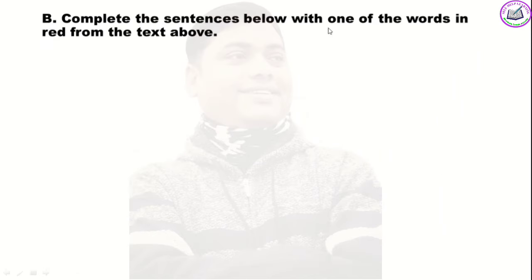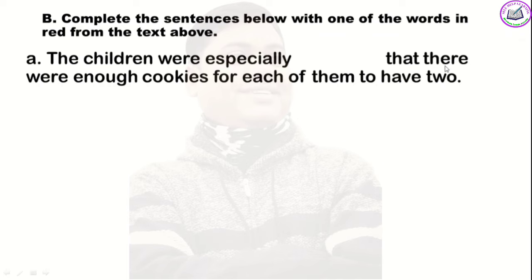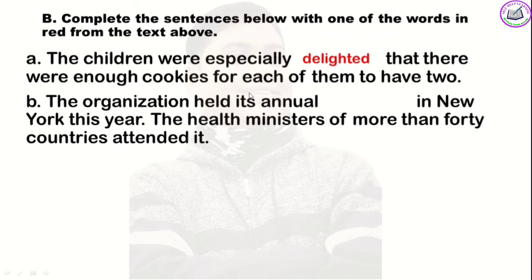Now complete the sentences below with one of the words in red from the text above. We have different bold-faced red words, and we have to select a word from there to complete the gaps. First sentence: 'The children were especially _____ that there were enough cookies for each of them to have two.' The answer is 'delighted.'